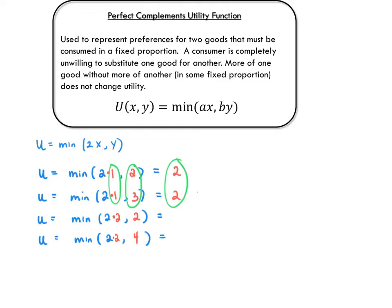Likewise, if we give the consumer two units of x instead of one, but keep y at two, let's look at utility. Utility is the min of 4, that's the 2 times 2, and 2. The min of 4 and 2 is still a 2. So here we increased x by 1, but we held y constant, and what happened was nothing. The utility is the same.